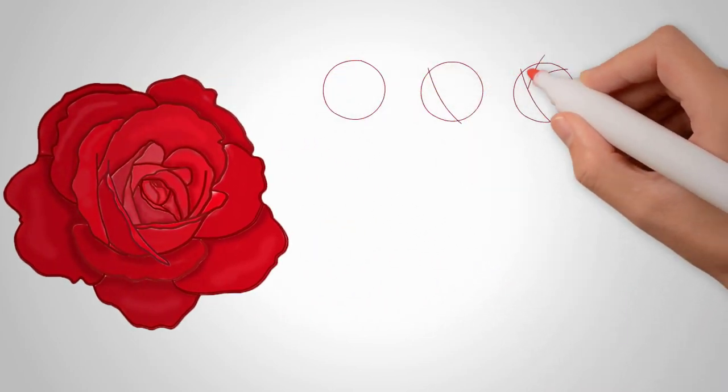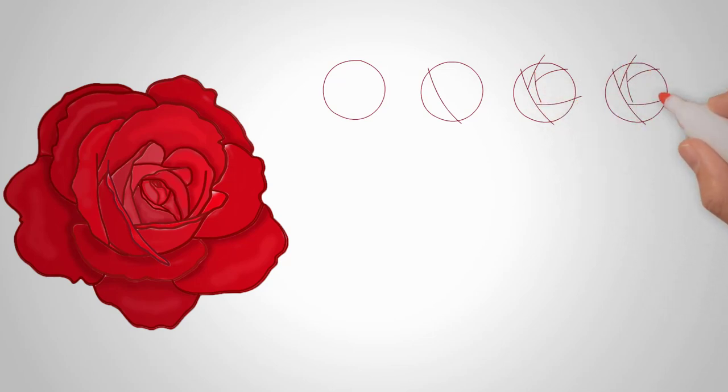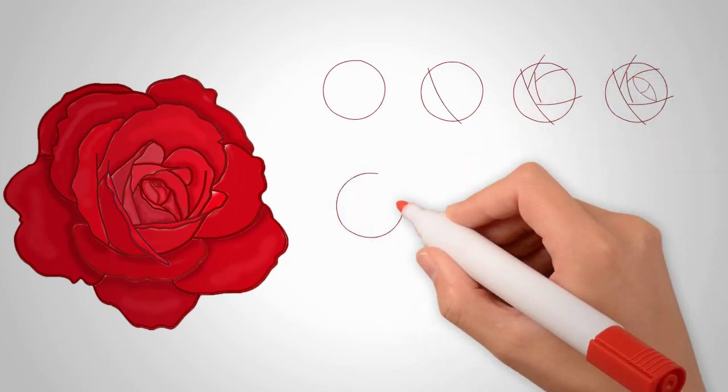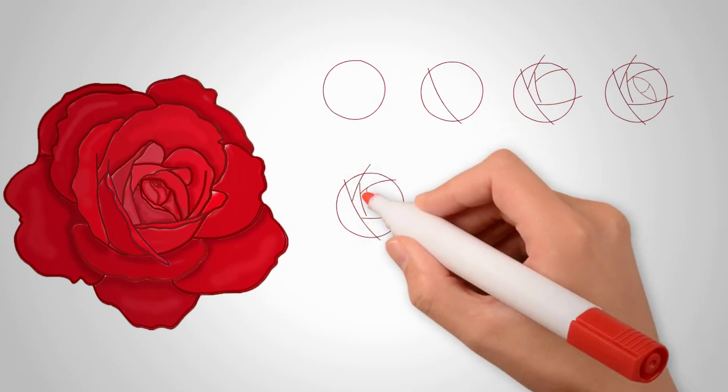Now look at another way to draw a rose. First, draw a circle. Now draw the petals in a circle. This will be the middle of the rose.